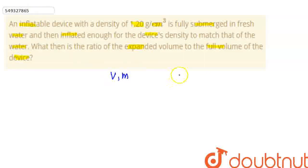How much density? Inflatable device - what is mass divided by volume? 1.2 grams per centimeter cube.